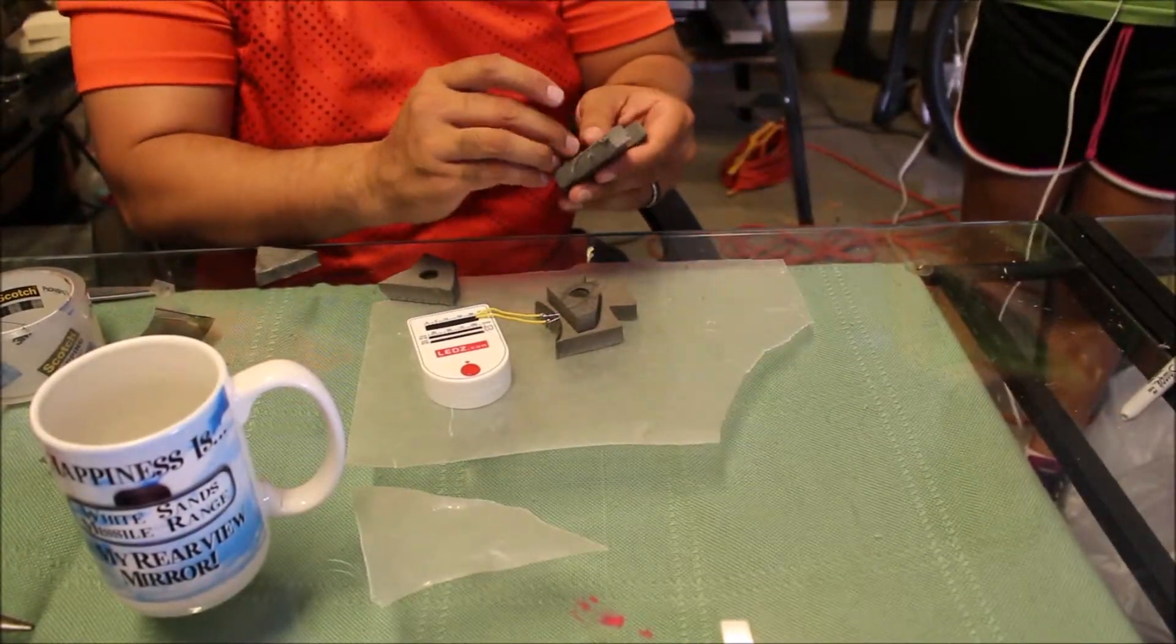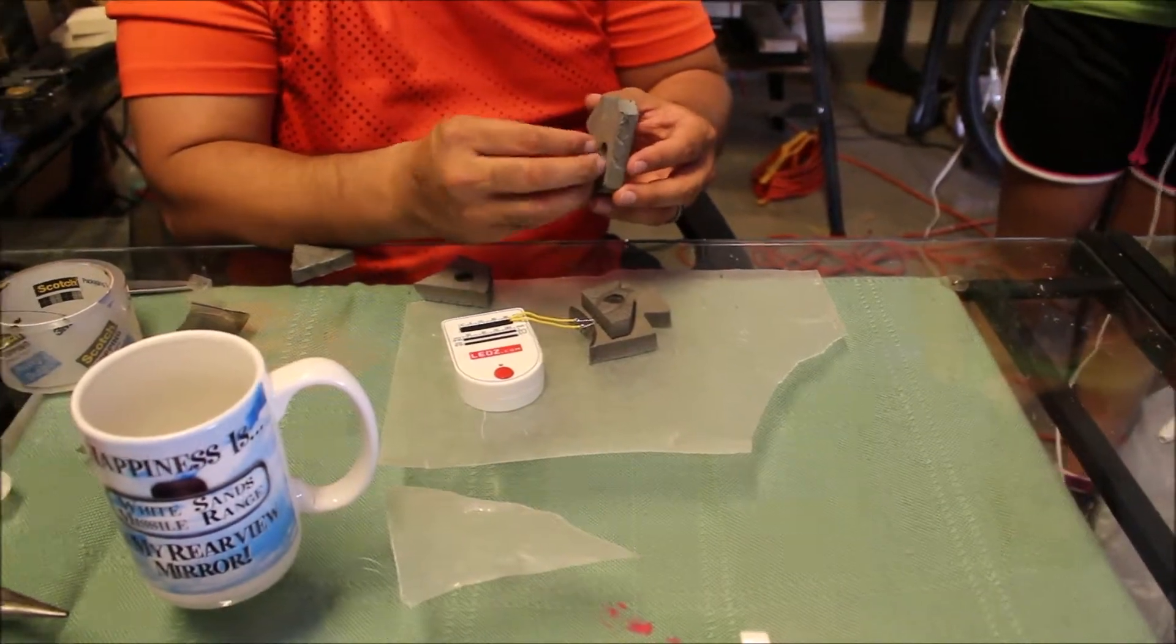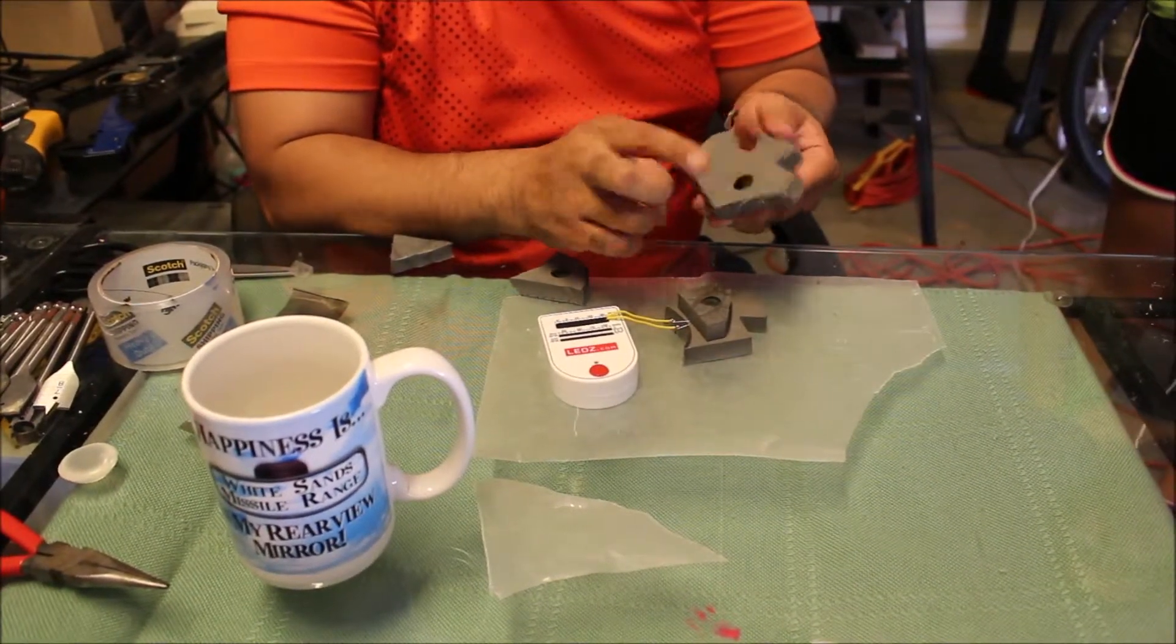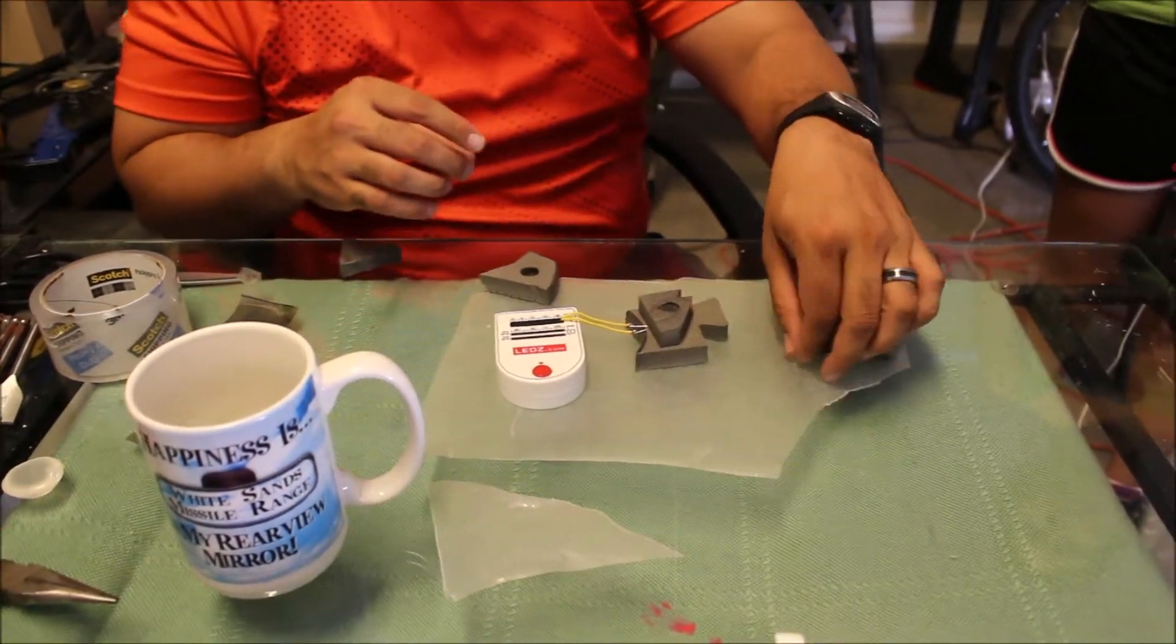As we know, foam is not very reflective. So I am using scrap window tint here to line the holes that I have created in hopes that this adds more reflectivity of the LED light that is in the middle.